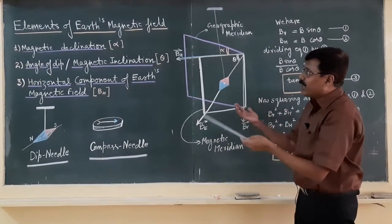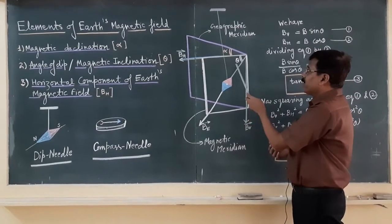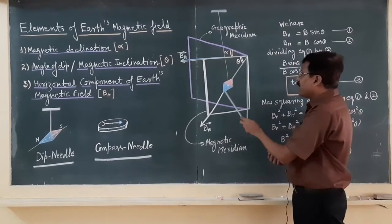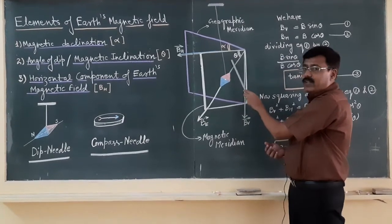And what is the angle of dip? Because when you suspend the dip needle at any place, it always makes some inclination from horizontal. So its axis, whatever angle it makes with the horizontal line, that is called angle of dip.